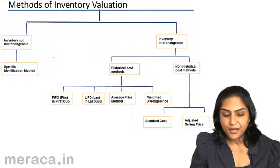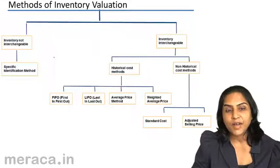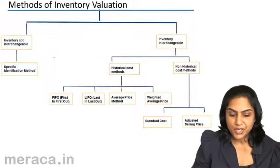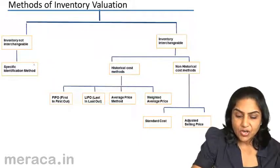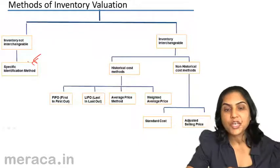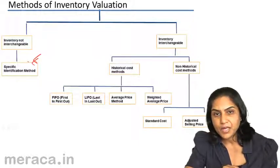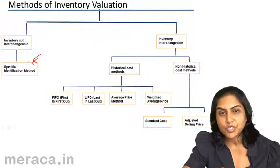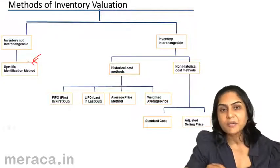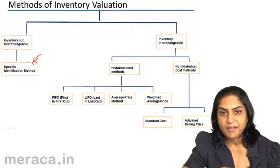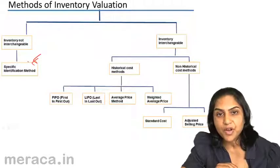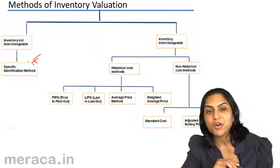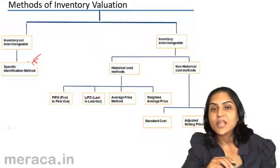Such inventory is valued exactly at the cost at which we purchased. And this is called the specific identification method. This means that if we have a batch of buttons which came in for Rs. 100, another batch which came in for Rs. 105, a third batch which comes in for Rs. 107, and this particular batch which has come in for Rs. 1005.